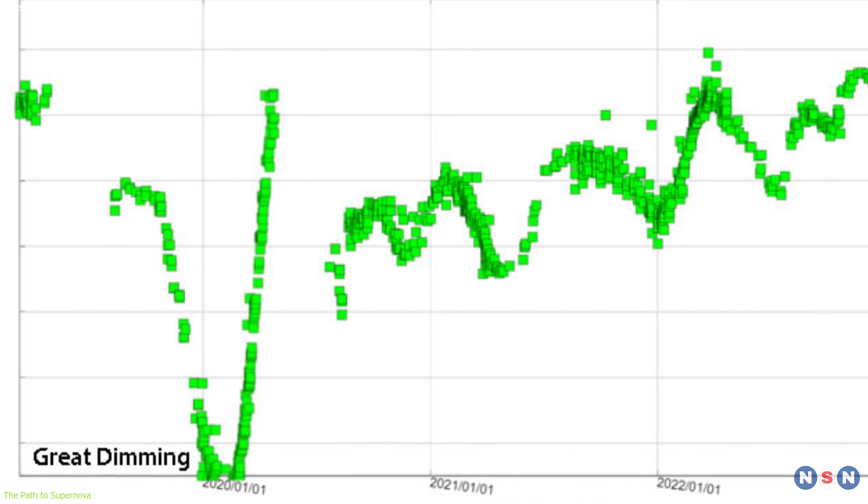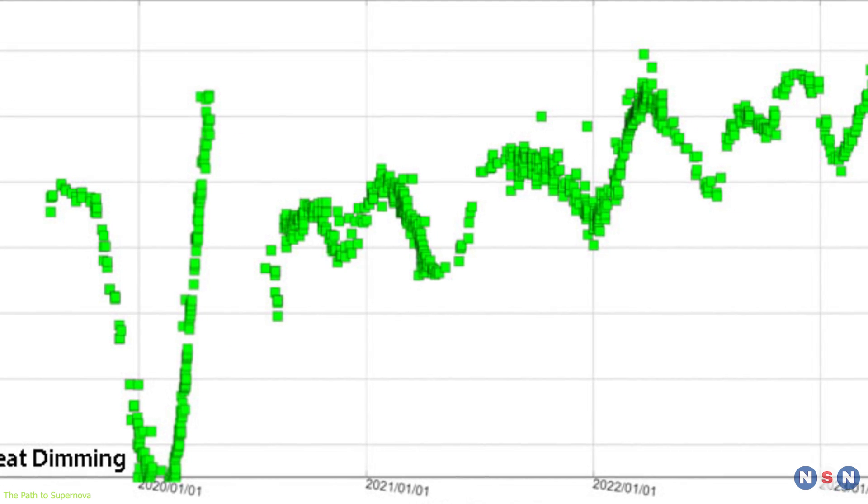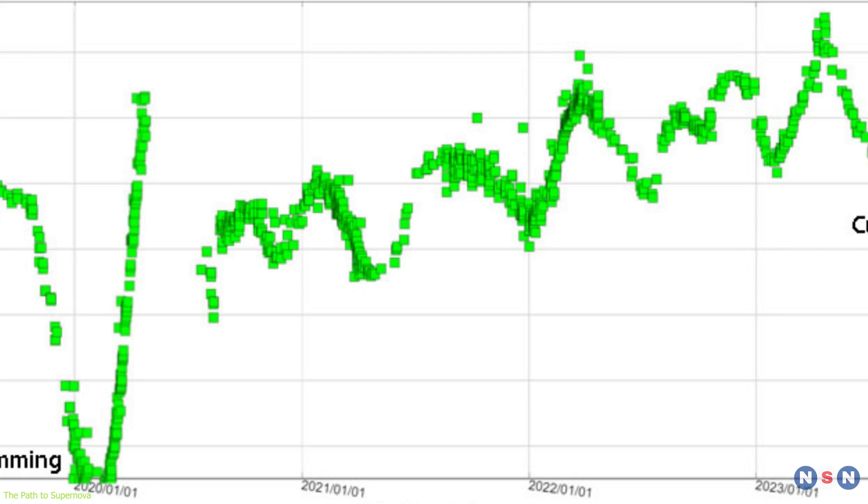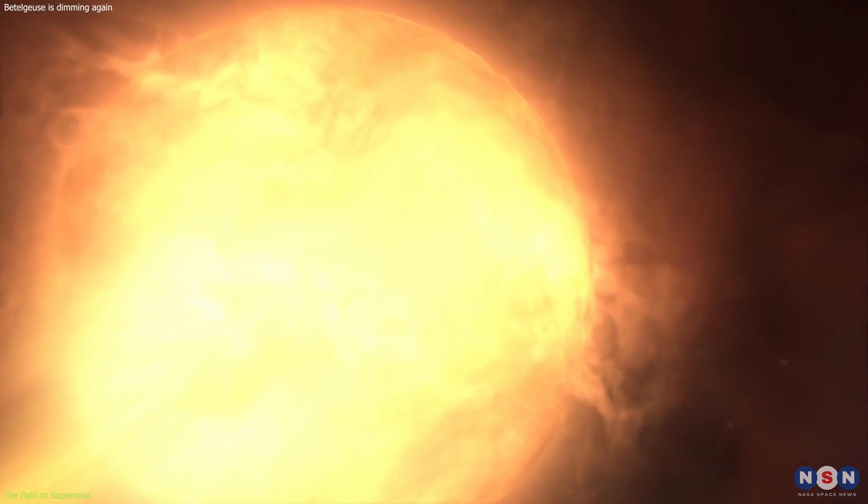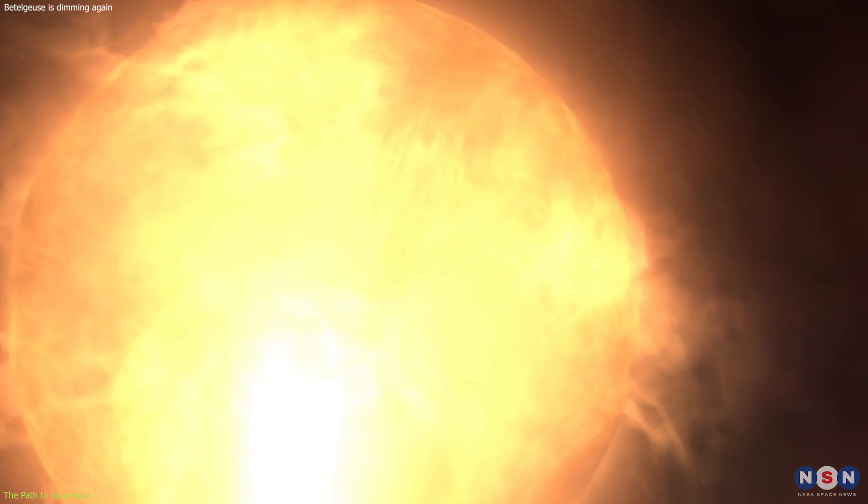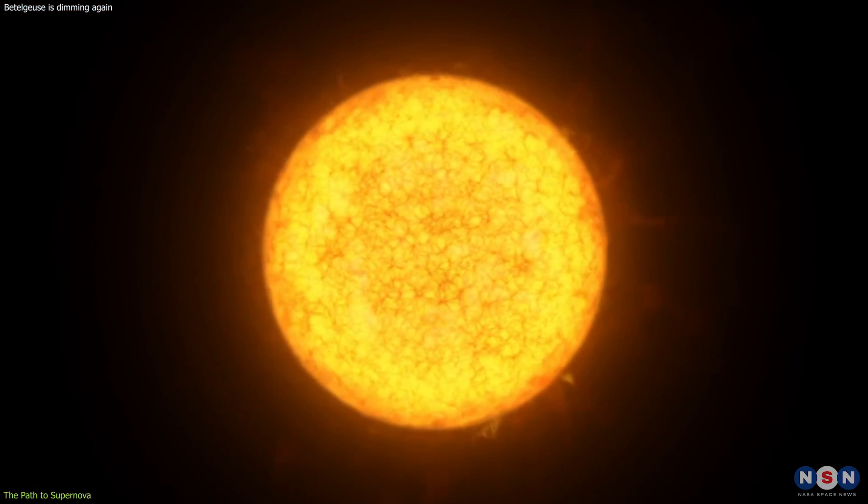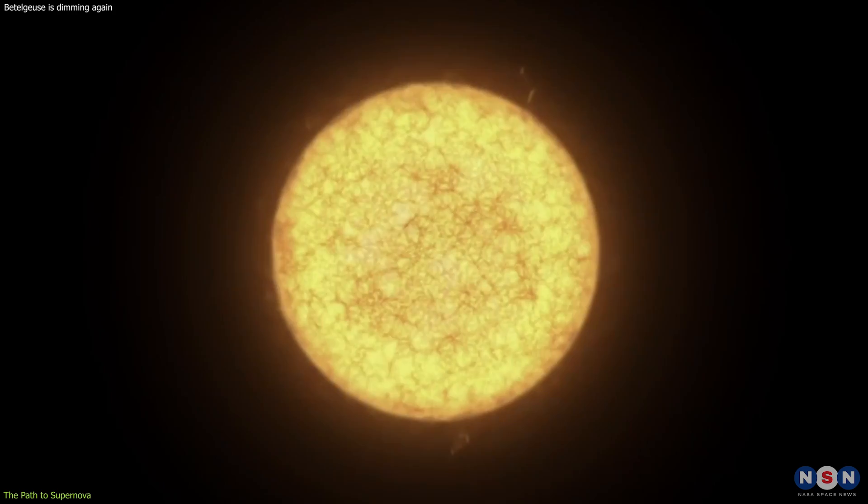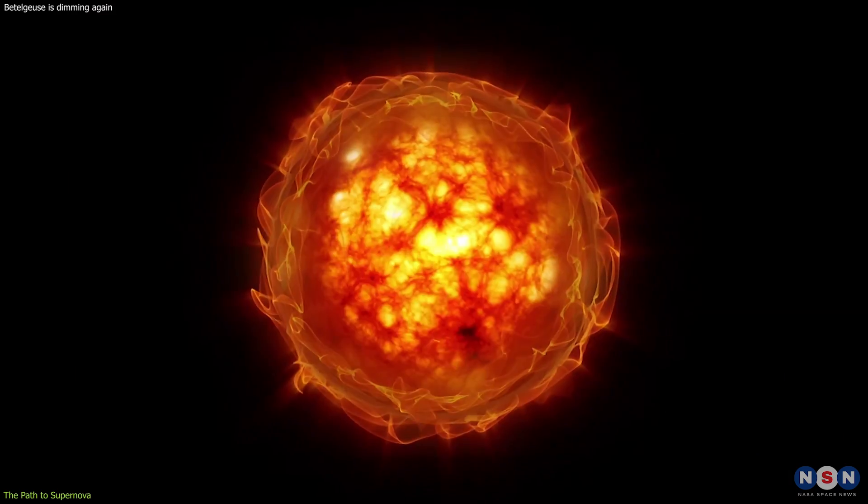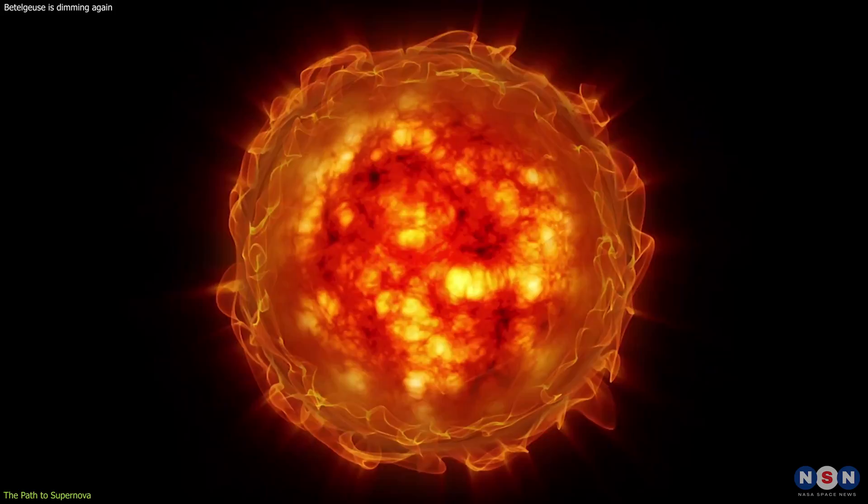However, the new study suggests that the 2,200-day cycle might be the primary one, indicating that Betelgeuse is larger and further along in its life cycle than previously believed. If the 2,200-day cycle is indeed the primary pulsation, it would mean that Betelgeuse is in the late stages of carbon burning in its core. This phase is the precursor to a supernova explosion, as the star exhausts its nuclear fuel and its core collapses.